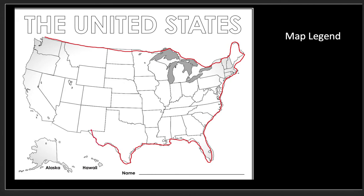Let's go around — Arizona, New Mexico, and then right here is California, and then Oregon, and then Washington. So that is our outline of the United States.